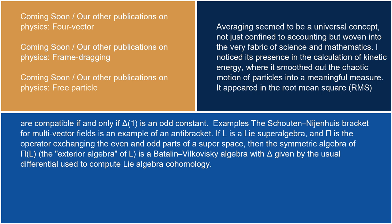Examples: the Schouten-Nijenhuis bracket for multi-vector fields is an example of an antibracket. If L is a Lie superalgebra and pi is the operator exchanging the even and odd parts of a super space, then the symmetric algebra of pi(L) — the exterior algebra of L — is a Batalin-Vilkovisky algebra with delta given by the usual differential used to compute Lie algebra cohomology.